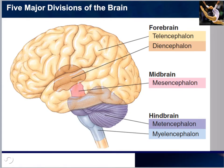You'll notice the word 'encephalon' in everything — that is because encephalon means 'within the head.' In humans, as in other vertebrates, the telencephalon — the left and right cerebral hemispheres — undergoes the greatest growth during development. The other four divisions are often referred to collectively as the brain stem.